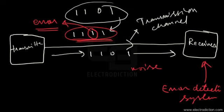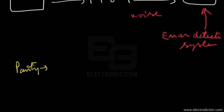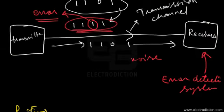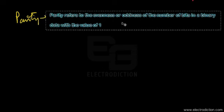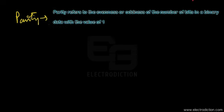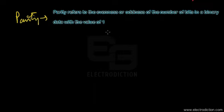Here we introduce the concept of parity, by which we can detect errors in digital transmission systems. Parity refers to the evenness or oddness of the number of bits in a binary number with the value of one — that is, the evenness or oddness of the number of ones contained in a binary data.